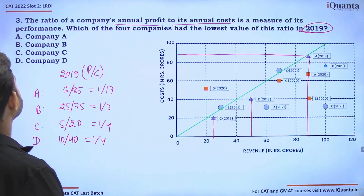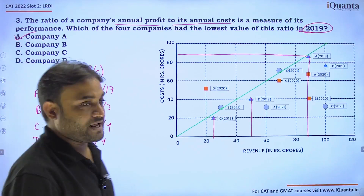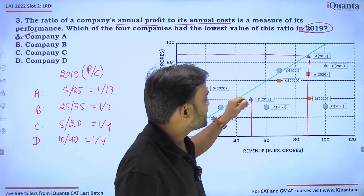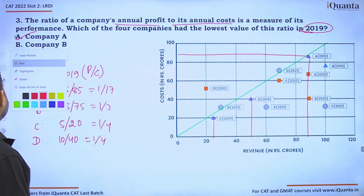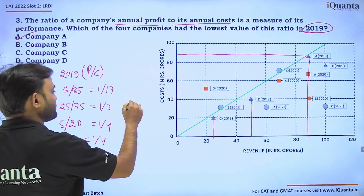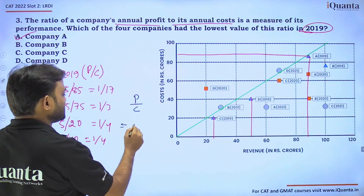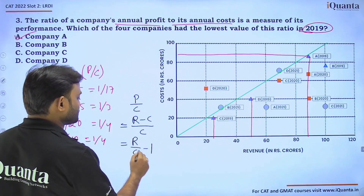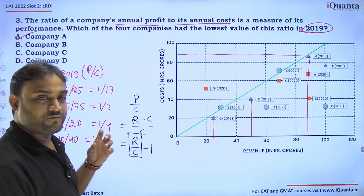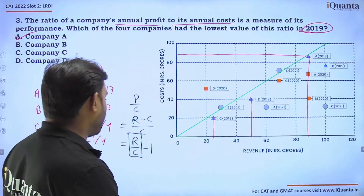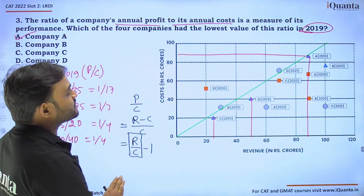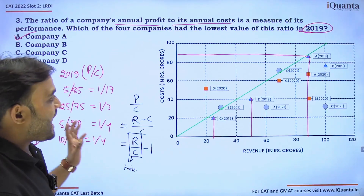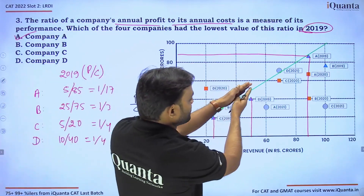There's a useful shortcut here. Profit upon cost equals (revenue minus cost) upon cost, which equals R/C minus 1. So minimizing profit/cost is equivalent to finding the minimum R/C ratio. Looking at the line where R equals C, points closest to this line will have the smallest R/C.